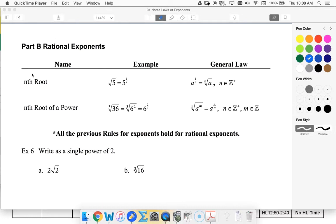So remember, the nth root is the same as a radical. So the square root of five, there's an imaginary two up here for square root. That's the same as five to the one-half.